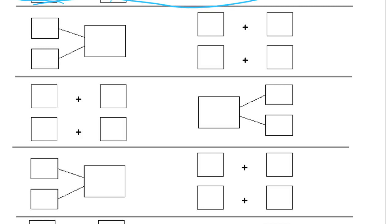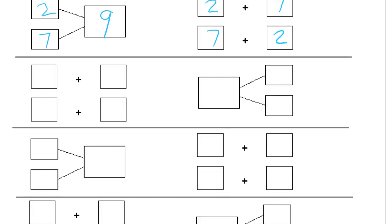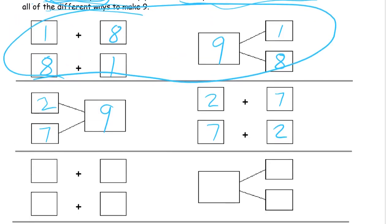So we could also use the 2 and the 7 together to make 9. So we could write that as 2 plus 7, that's one expression. And then 7 plus 2, that's the other expression that goes with this number bond. So now we have 1 and 8, we have 2 and 7.